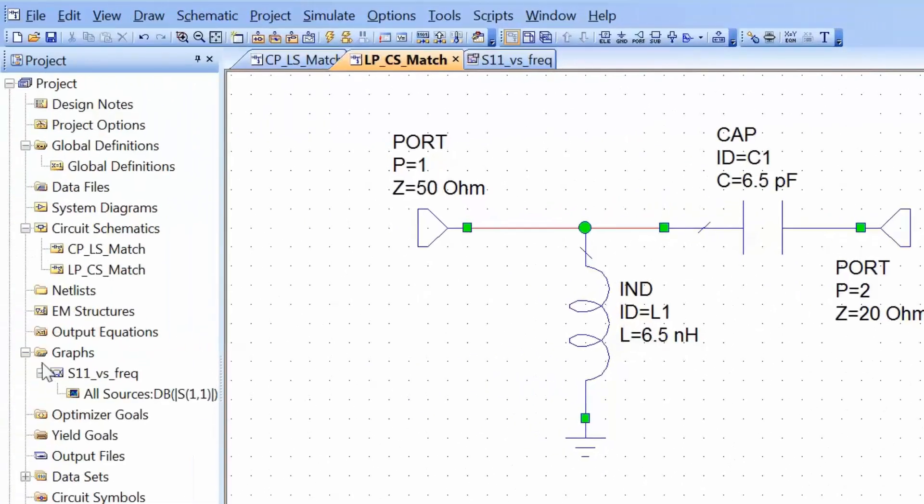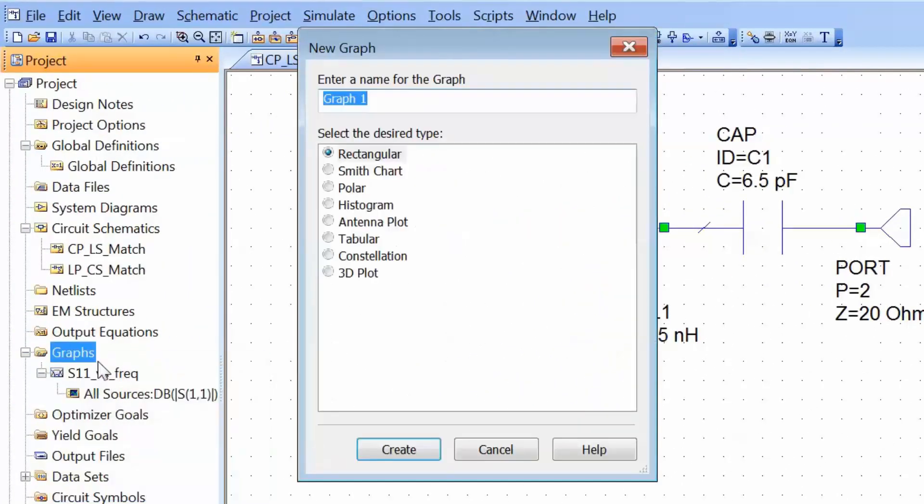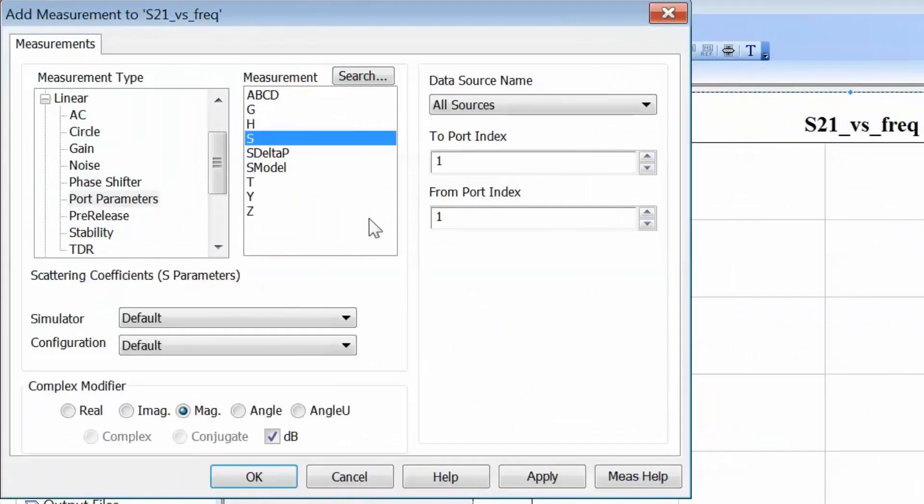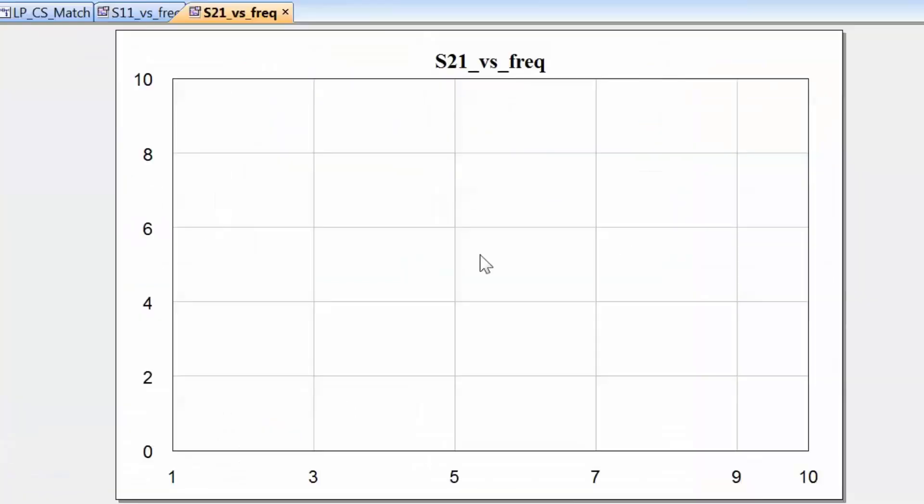So let's go back to graphs, right click and open a new graph and we'll call it S21 versus frequency. We'll use a rectangular graph. Now we'll right click, select add a new measurement and then we will choose S21 as the measurement. So we want to see what power is received by port 2 when the originating power was coming from port 1. Again for the data sources we'll just keep it to all sources because we want to see the S21 for both matching networks. Then simulate.